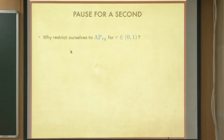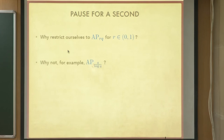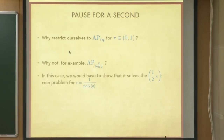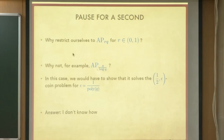Why restrict to this case? It is not known to be easy in other cases. For example, why not take r to be 1 over log q? There you would have to show it solves the half-comma-epsilon coin problem, and half is a nicer number than 1 over some poly n. The answer is I do not know how — I can only do it when r is a constant.